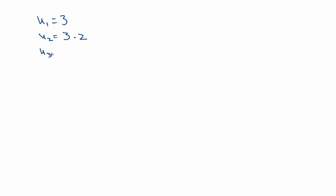Well, U3 then is going to be, I take my second term, 3 times 2, and I multiply it again by a common ratio, which is 2. And if I rewrite that, that's the same thing as saying 3 times 2 squared.